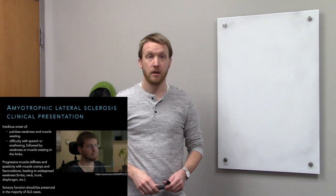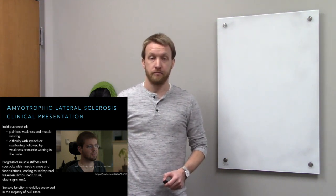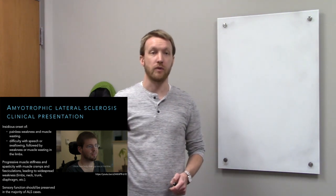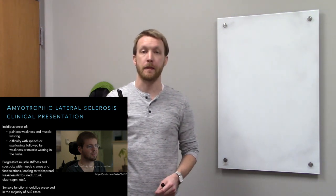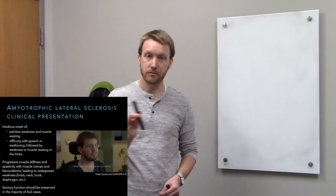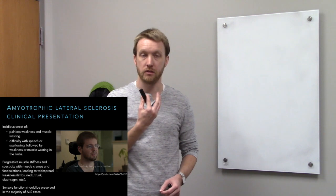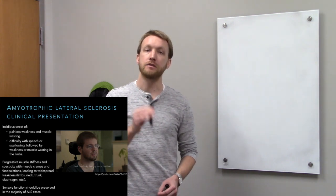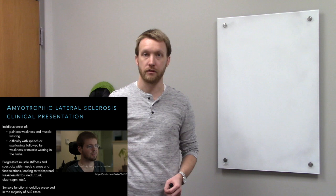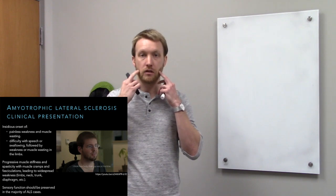ALS is going to progress rapidly once symptoms arise — there's about two to five years left to live. So in that six-month period, you can see visible wasting: the patient is noticeably thinner, and there's a noticeable difference in his speech — far more slurred after six months. That's because of the progressive wasting of the motor neurons dedicated to controlling speech.